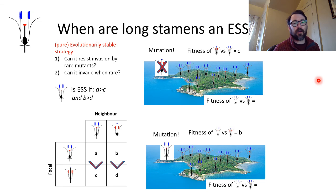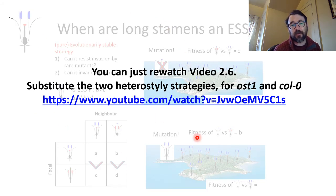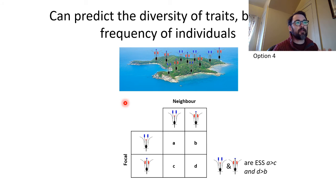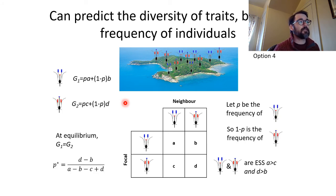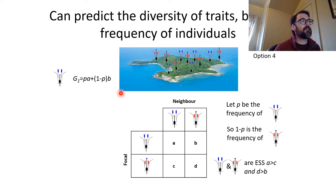There was a video where I went through all the details of how to solve a two-by-two matrix game. One advantage you have over the in-person version is you can just go back and re-watch it — it covers how to find when one strategy, the other, or both would be the ESS. Remember there are four possible outcomes. It also covers how to predict the frequency of each strategy if OST and Columbia can coexist.